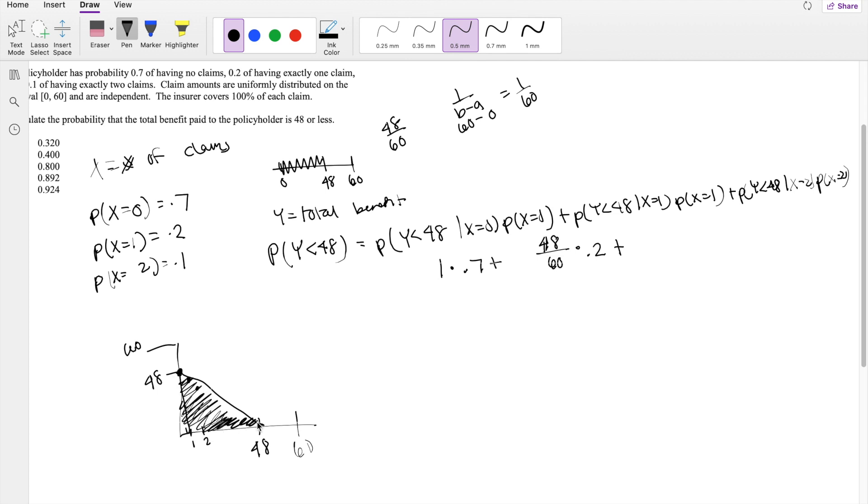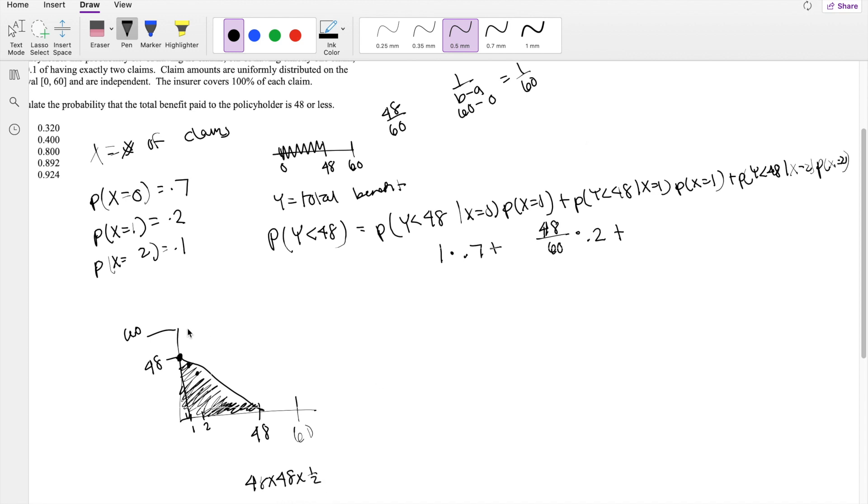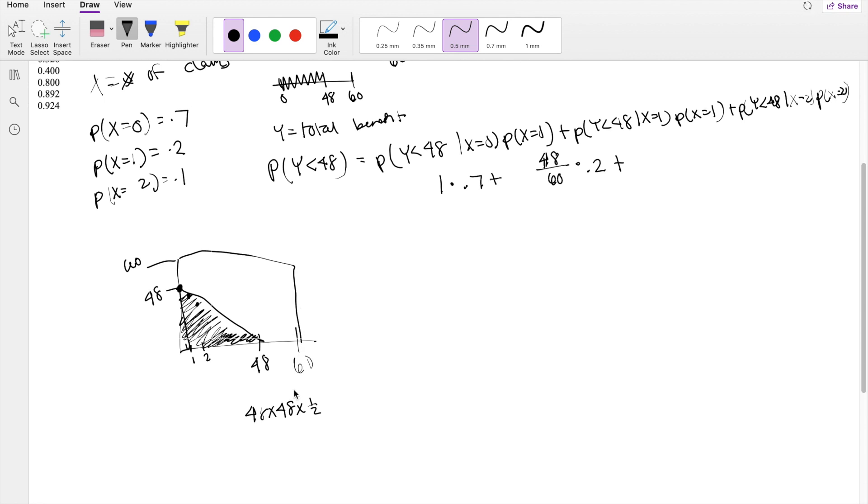So this is actually just a triangle with a base of 48. So that's 48 times 48 times 1 half. And what is the total limit, or the total probability? Well, that's 60 times 60. It's a square. 60 times 60.